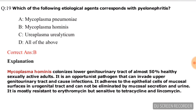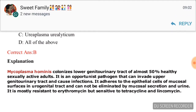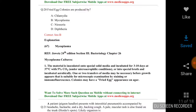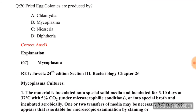Next question: which of the following etiological agents corresponds with pyelonephritis? Options are mycoplasma pneumonia, mycoplasma hominis, Ureaplasma urealyticum, or all of the above. The correct answer is mycoplasma hominis, option B.